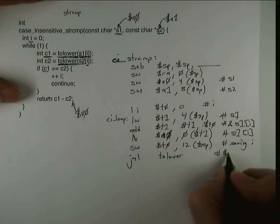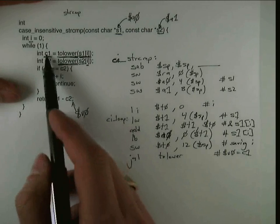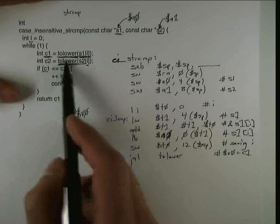And what happens is that the return value of tolower is C1. And so, since I know that V0 is a caller saved register and it's going to be killed by the next call to tolower,